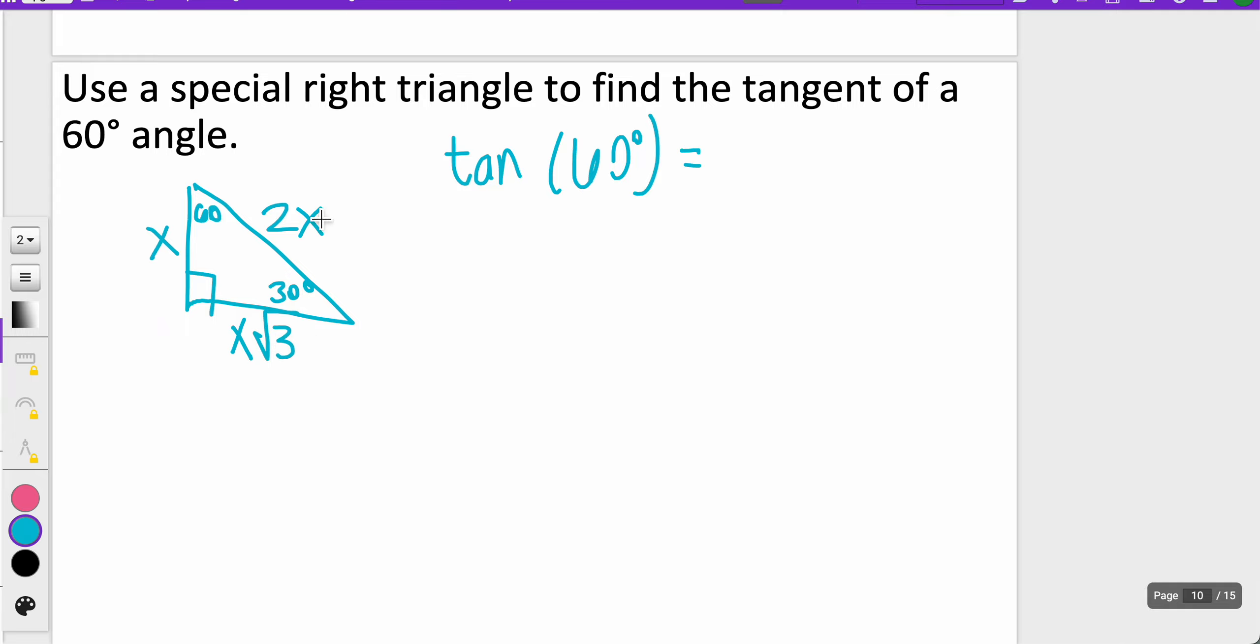For my tangent of 60, the opposite over adjacent would be X square root of 3 over adjacent X. In this case, I can simplify X divided by X, so that's just going to be the square root of 3 to find my answer, and then in my calculator, that rounds to about 1.7321.